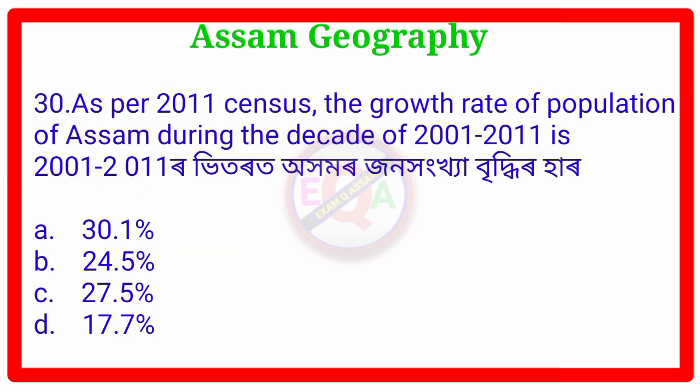Question 30. As per the 2011 census, what is the growth rate of the population of Assam during the decade of 2001 to 2011? The answer is Option D: 17.7%.